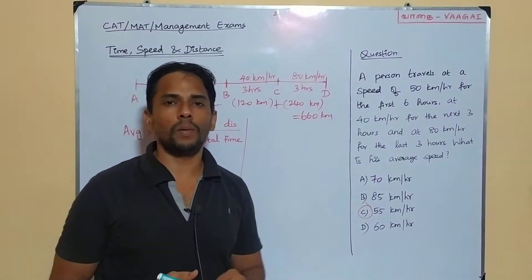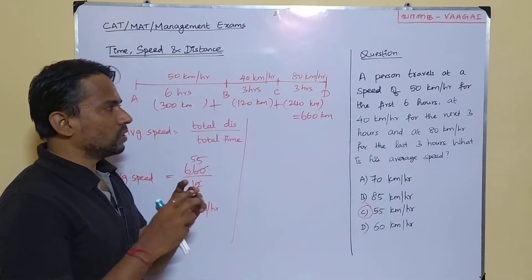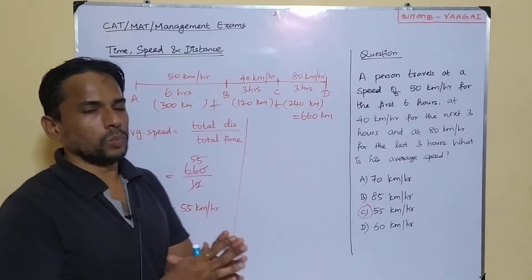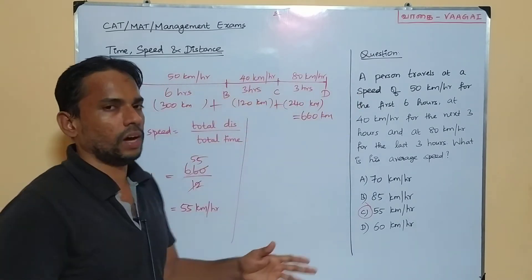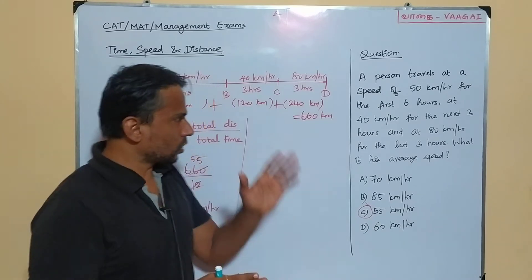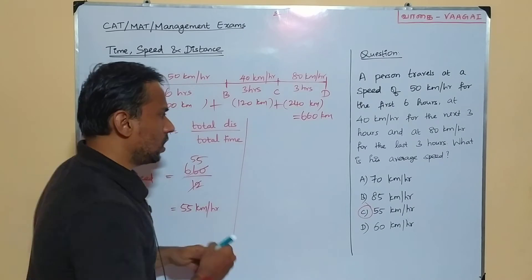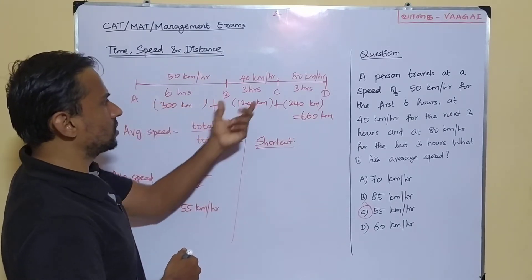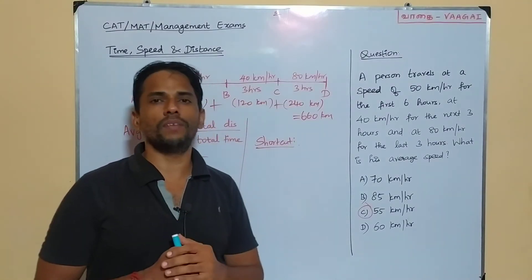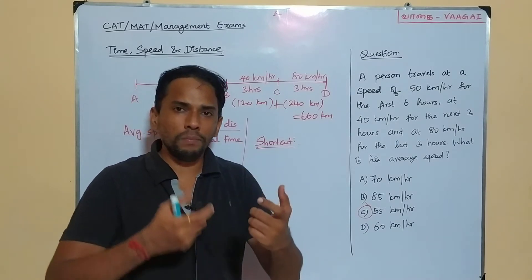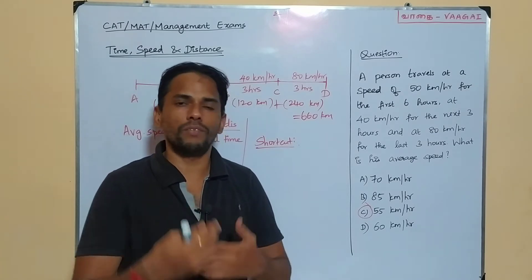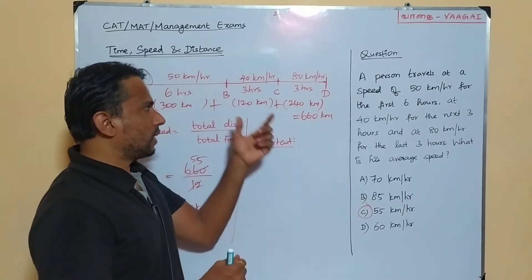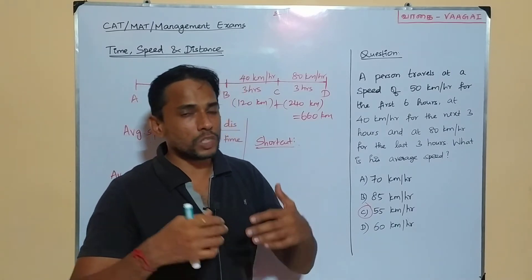As I mentioned, we'll now see a brilliant and easy shortcut. The shortcut just involves a few steps and bypasses the distance calculation entirely. The key property of average speed is: when the time taken is equal across parts, we can directly take the average of the speeds themselves.